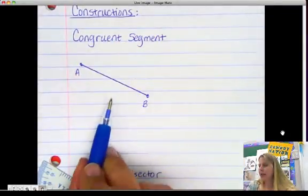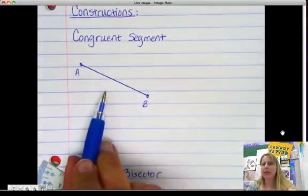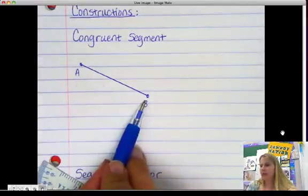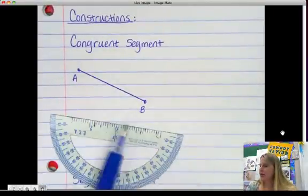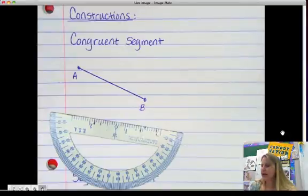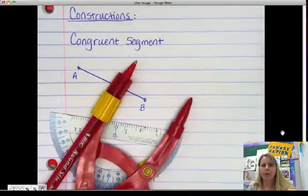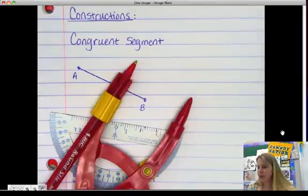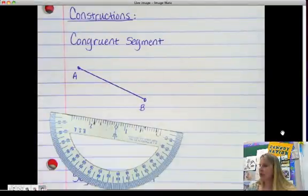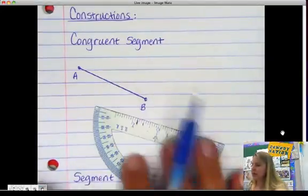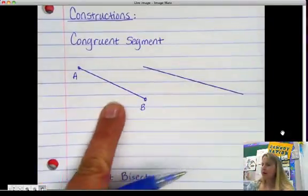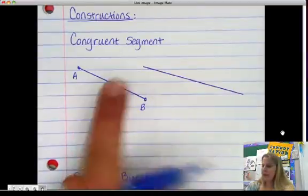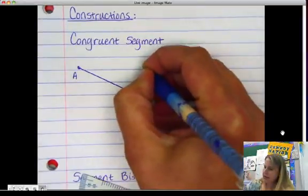Now, I want to make a segment that's equal in length to this one. But the trick is, in constructions, I don't measure with a ruler. Instead, I measure with a compass. Compasses are the measuring tools in constructions. So, in order to copy this segment, I'm going to draw another line that I know is going to be longer than the one I'm trying to get. I'm going to call this side C.